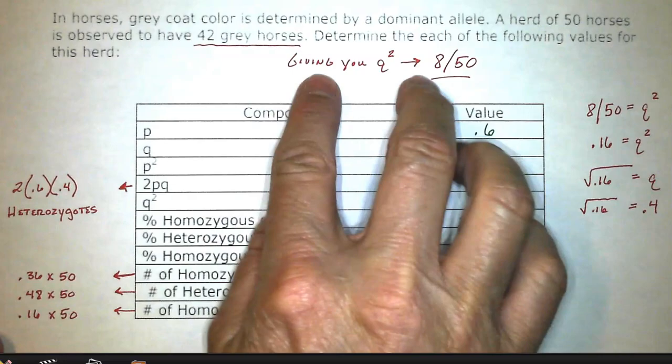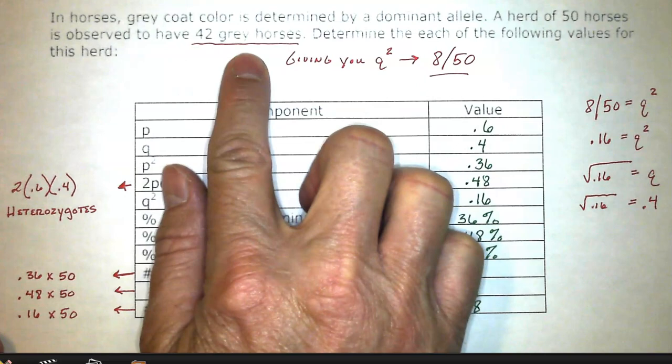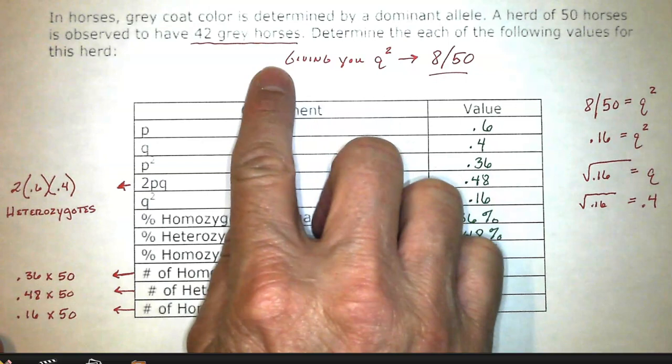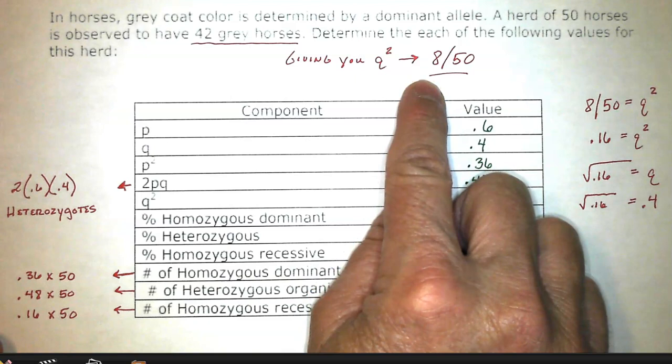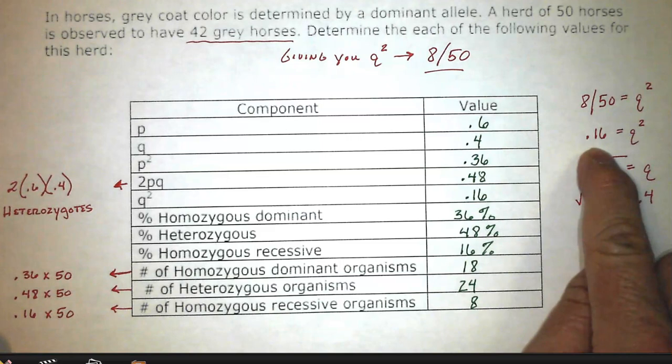So what are they giving you? That's the first thing we always need to figure out from a question, then we can figure out what they're asking, and this question they're asking for everything basically. But what they're giving us is they're telling us 42 of them are gray, which means those are the dominant phenotypes. So the only way you're gonna have a recessive phenotype is if you're homozygous recessive. So essentially they're telling us that 8 of them are homozygous recessive showing that phenotype. So 8 out of 50, so that's giving us q² is what it's giving us. So once you figure out what 8 out of 50 is to determine what q² is, you're going to figure out that's 0.16.